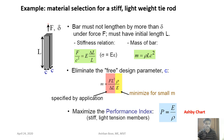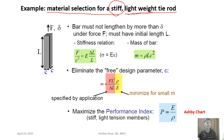Now let us take another example: material selection for a stiff, lightweight tie rod. Again it is a tie rod, and again it must be lightweight, but now the requirement is stiffness rather than strength. Stiffness means the rod should not elongate easily. For certain applications, it is more important that the component does not deform than that it withstands high stress. So what will the performance index be in this case?